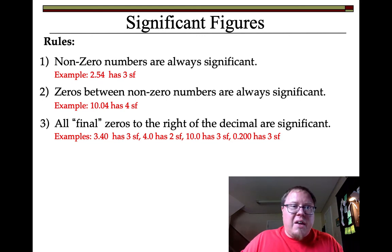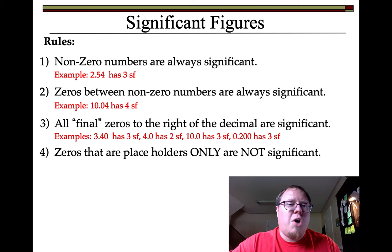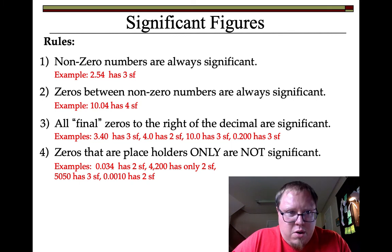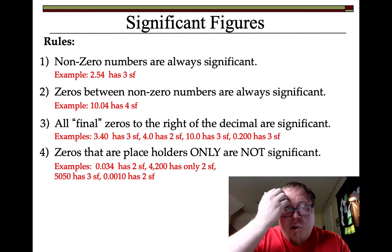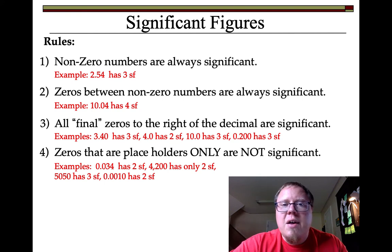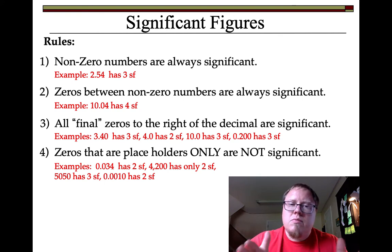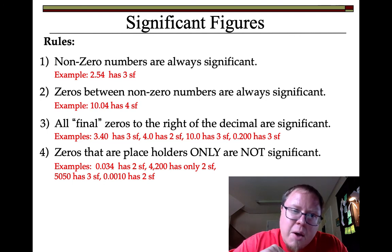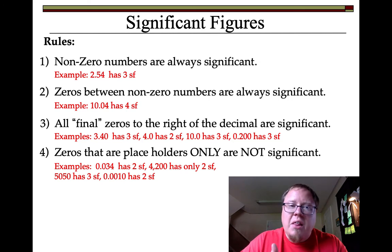So is every number you write down significant? Well, the fourth rule is: no, some are not. Zeros that are placeholders only are not significant. For example, 0.034 — I had a .03 and a .04 line, and I think it's between the 3 and the 4. That first zero after the decimal, that's not actually a measurement line. The device was just measuring a really small number, so those zeros in front are not significant — they're just telling you it's really, really small.